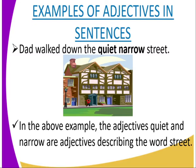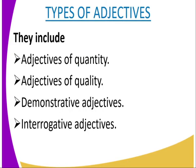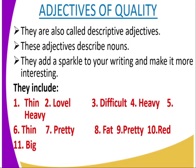'Dad walked down the quiet, narrow street.' Here, 'quiet' and 'narrow' are adjectives describing the noun 'street.' We also have different types of adjectives: adjectives of quality, adjectives of quantity, demonstrative adjectives, and interrogative adjectives. We'll begin with adjectives of quality.